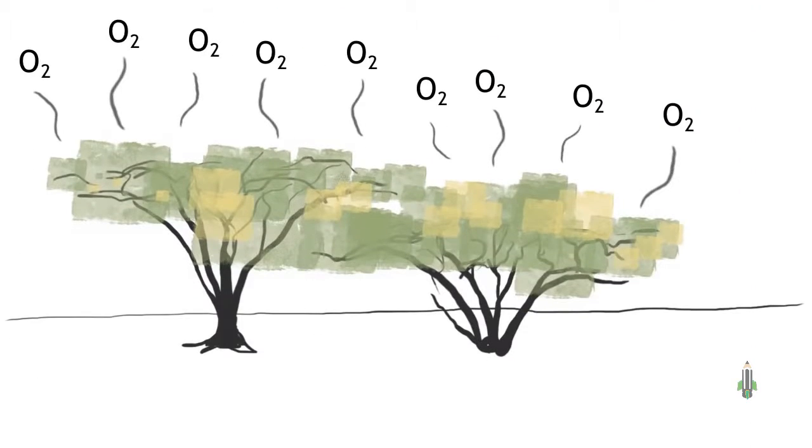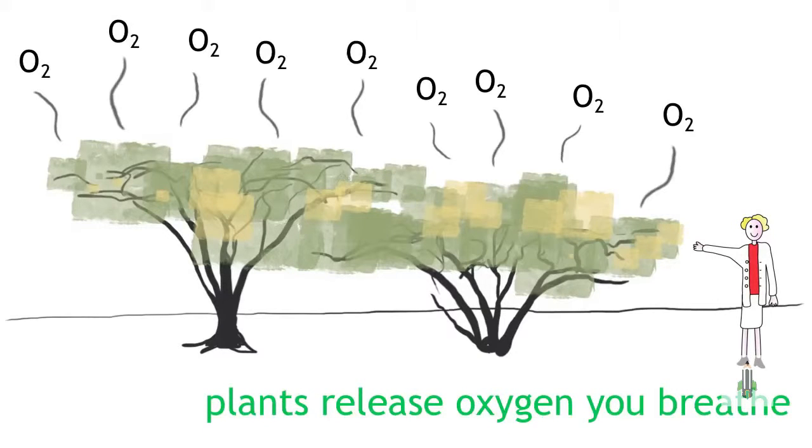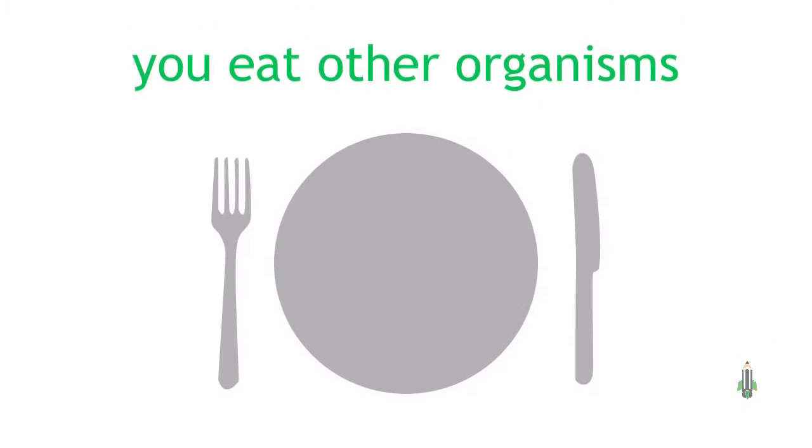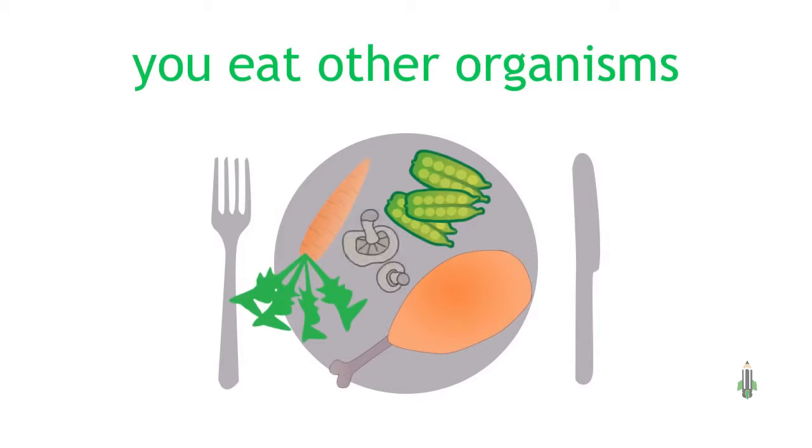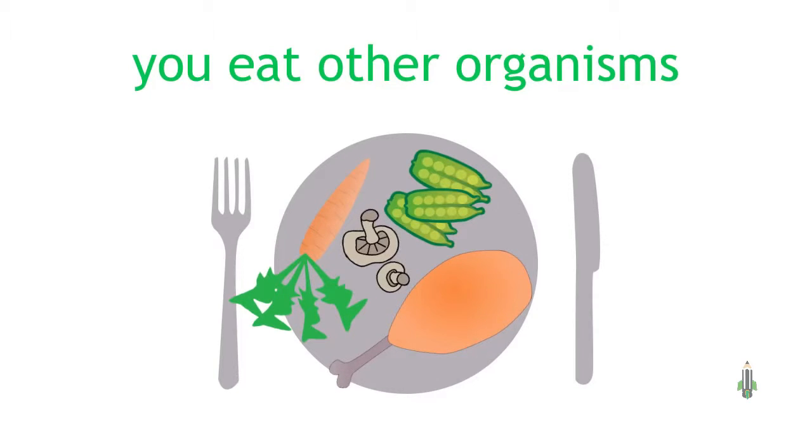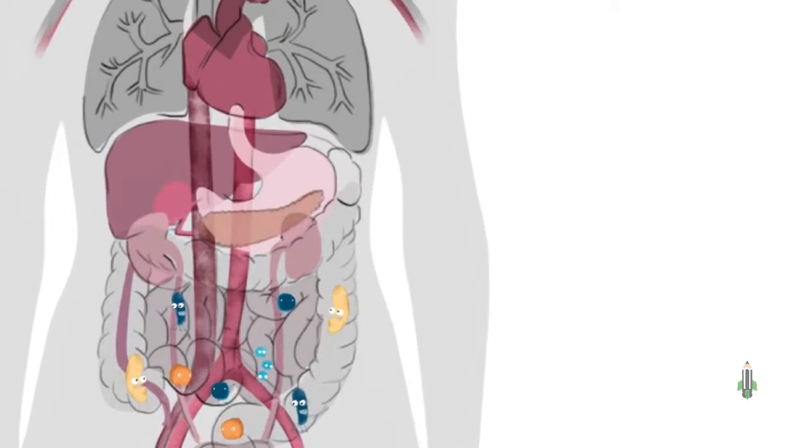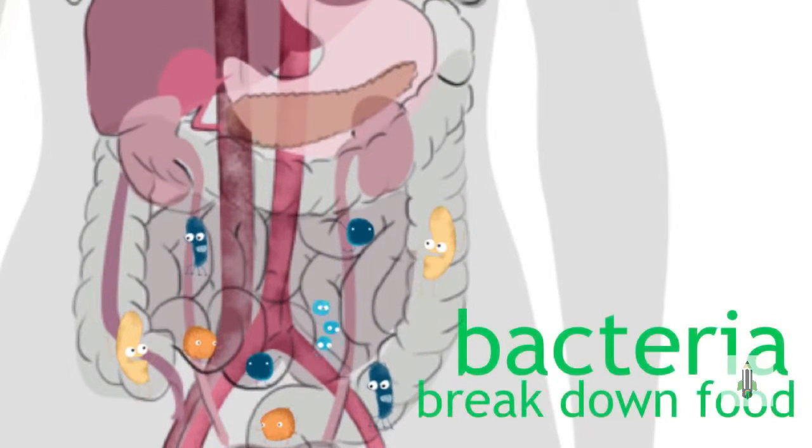You breathe oxygen that's been released into the air by photosynthesizing plants. You eat animals, plants and even fungi as nourishment for your body. And once that food is in your body, bacteria that live inside of you break it down so your body can use it.